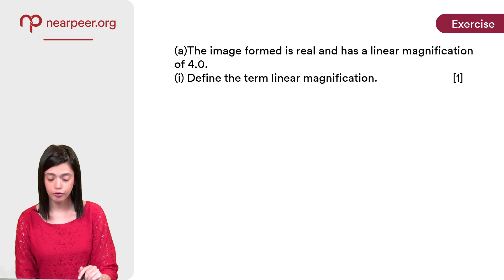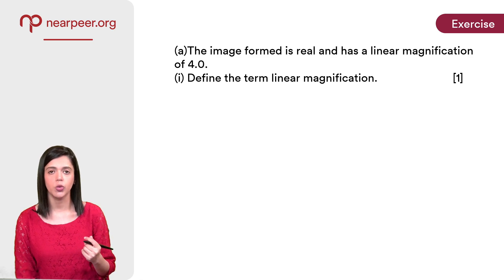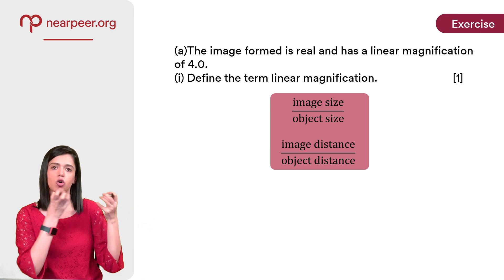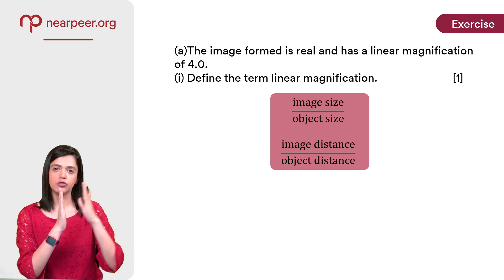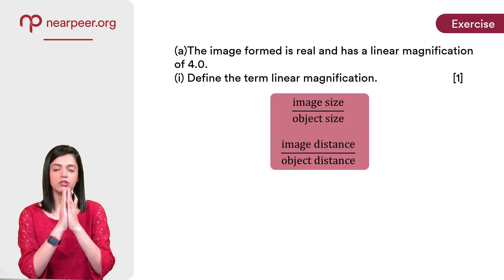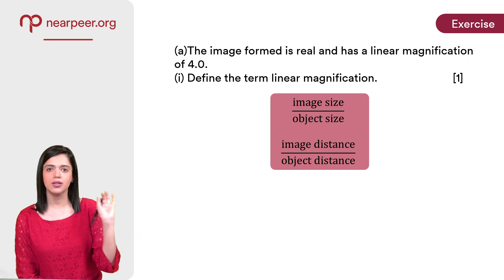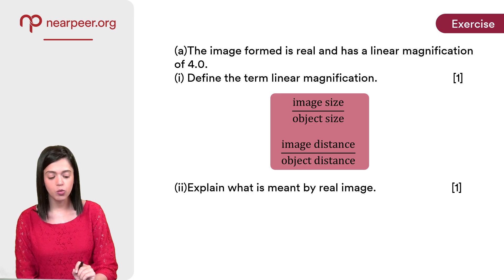The image formed is real and has a linear magnification of 4.0. Define the term linear magnification. There are two ways: you can say it is the size of the image divided by the size of the object, or the distance of the image from the center of the lens divided by the distance of the object from the center of the lens. Either answer will get you the one mark.